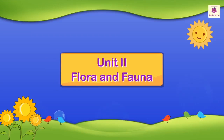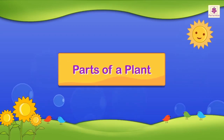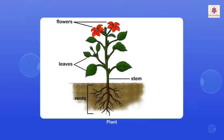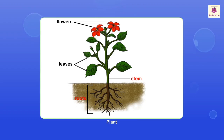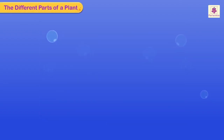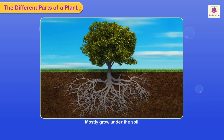Unit 2: Flora and Fauna. Parts of a plant. A plant consists of four parts: roots, stem, leaves, and flowers. Each part plays an important role.